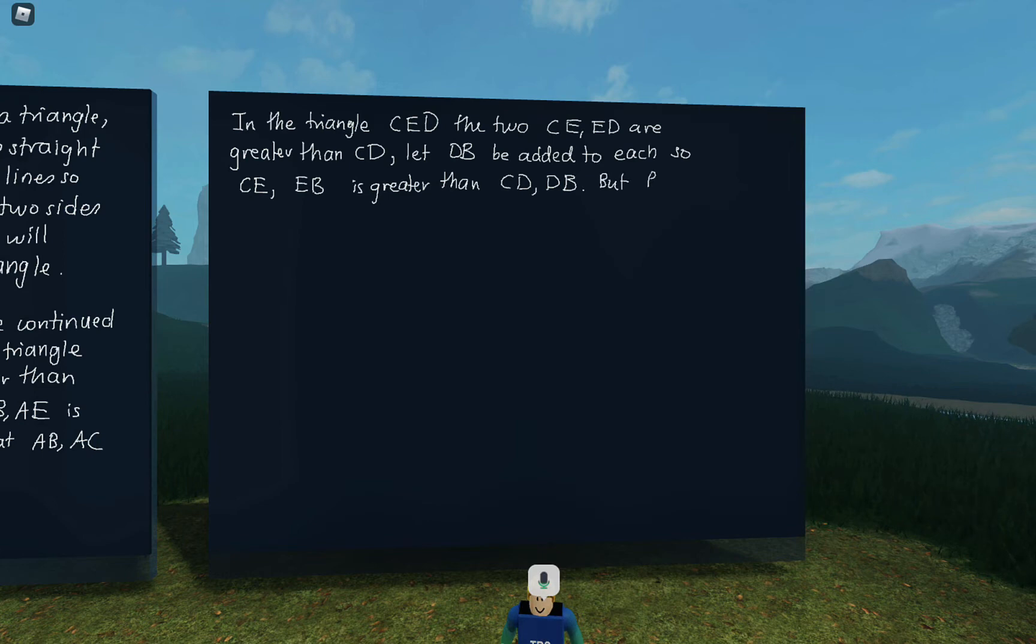But we just proved that BA, AC was greater than BE, EC. And BE, EC is greater than by what we just showed BD, DC. So that shows that BA, AC is, as you could say, is much greater than BD, DC. Just meaning that you have an arrangement like this. A is much greater than C. That's how he puts it.